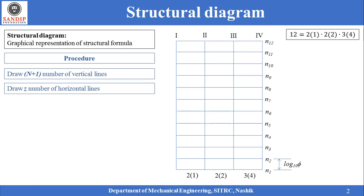The next step is to draw z number of horizontal lines where z is equal to total number of speed steps in a gear box. This is a 12-speed gear box so we have drawn 12 horizontal lines. The first speed is mentioned at the bottom and the last speed is mentioned at the top. All these speeds n1 to n12 are arranged in geometric progression, so they are not uniformly distributed. However we have drawn them at equal distance as if they are equally spaced.